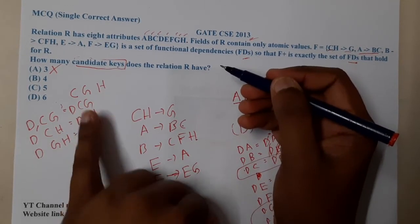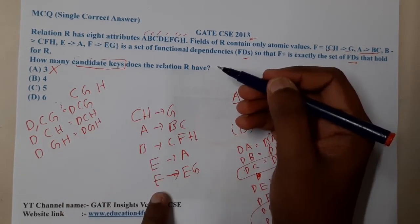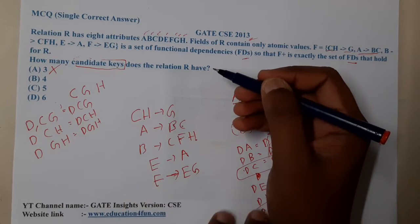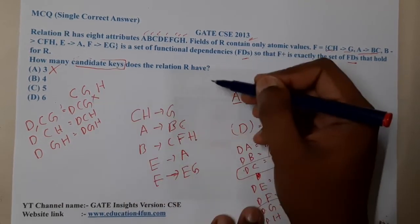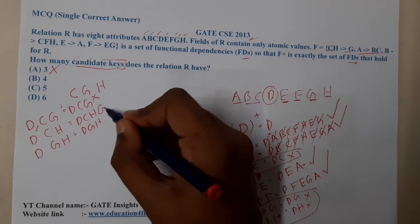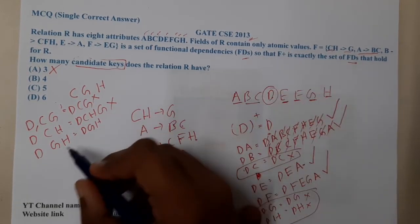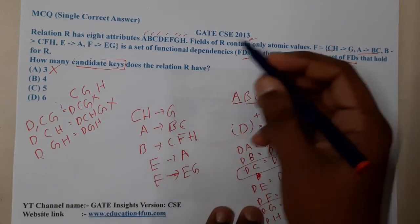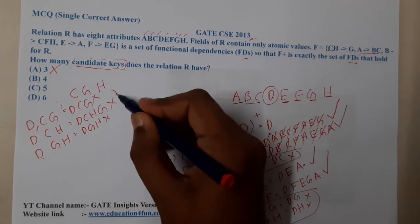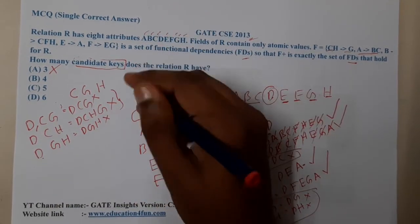If CG is available, I can't do anything. With CH, I can't do anything. With CH, I can get AG. From G, there is nothing. Hence it also got struck there. DGH - nothing.